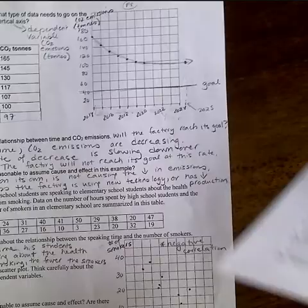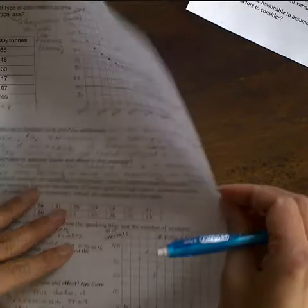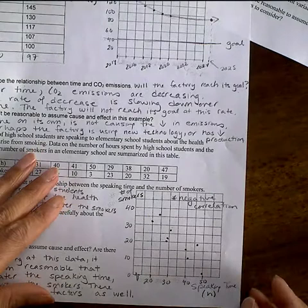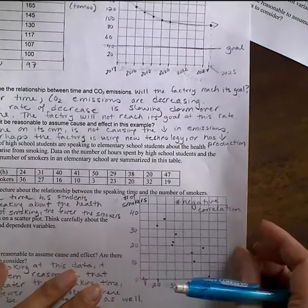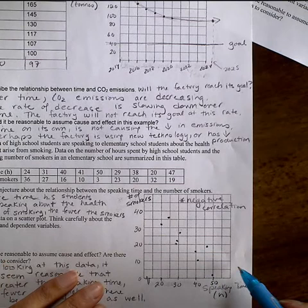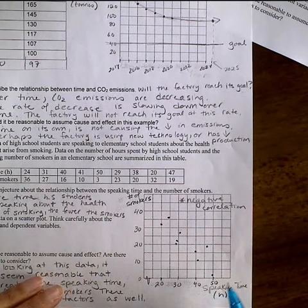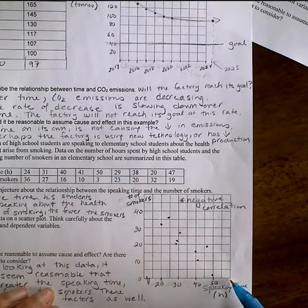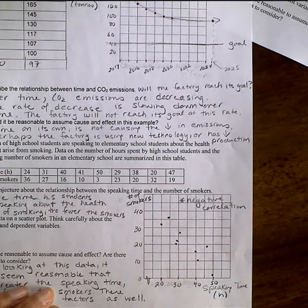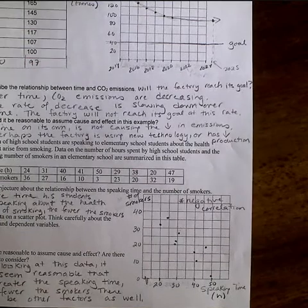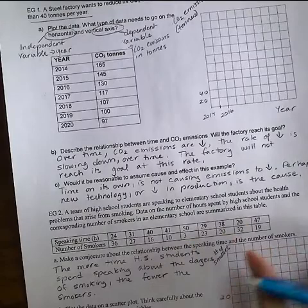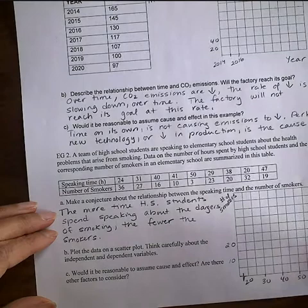So when you have graphed your results, or the results of the study, you can see that it does seem to, or the number of speaking times as that increases, we can see that the number of smokers is decreasing. This is an example of negative correlation, which I'm going to talk about in a little while. And your graph should look something like that. Would it be reasonable to assume cause and effect? Are there other factors to consider?